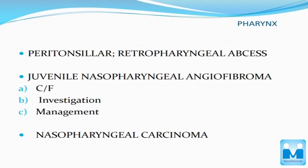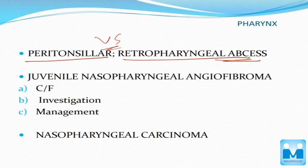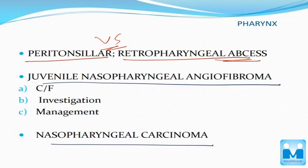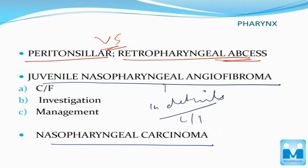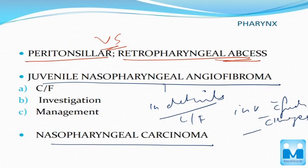Other important topics in pharynx are the abscesses — the difference between peritonsillar and retropharyngeal abscesses is an important topic. You also have to read about juvenile nasopharyngeal angiofibroma and nasopharyngeal carcinoma in detail — clinical features, investigation with findings, images, and treatment available.